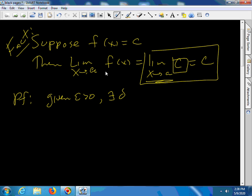we can find the delta greater than zero, such that f of x minus the limit is less than epsilon, whenever zero is less than x minus a, which is less than delta.